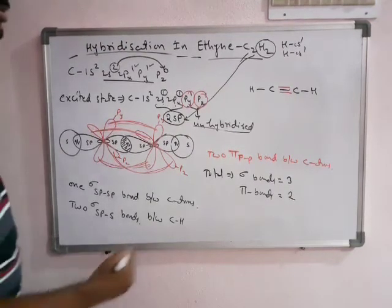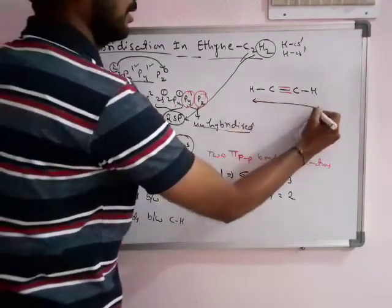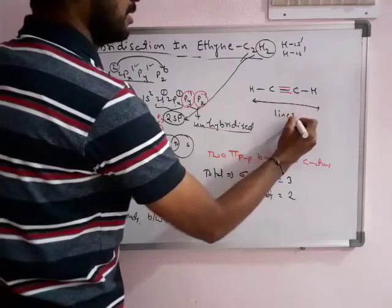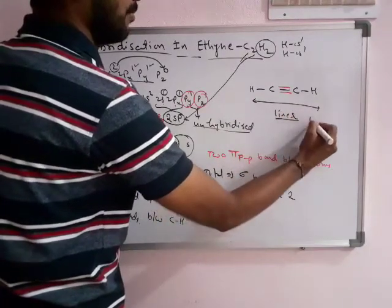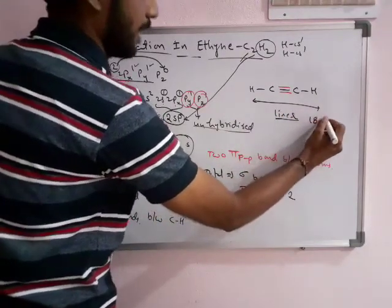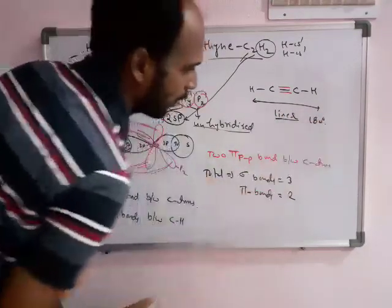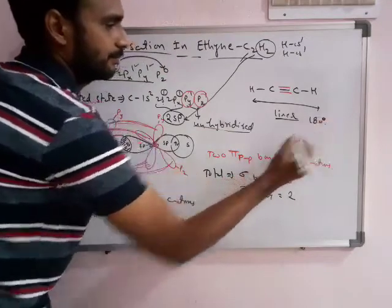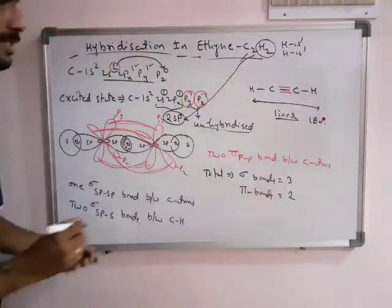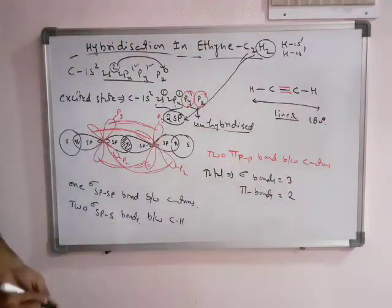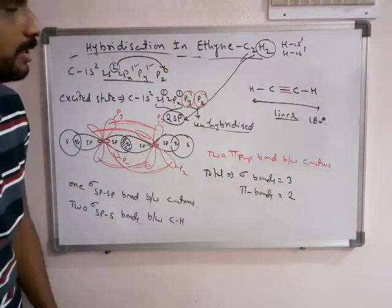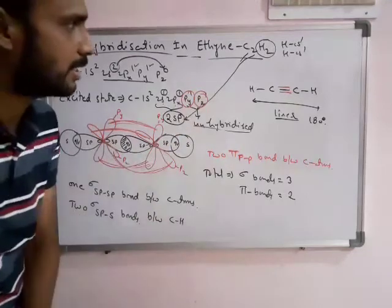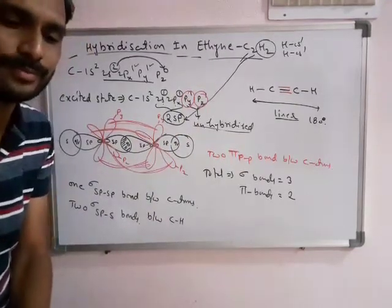If you see the structure, the shape is a linear shape with a bond angle of 180 degrees. This is about the hybridization of carbon atoms in the acetylene molecule.